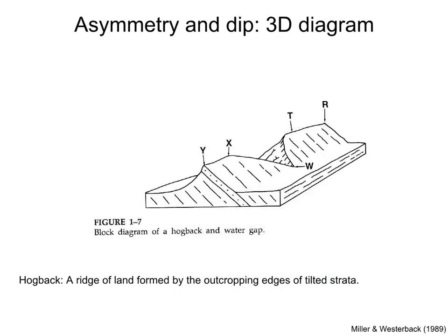These relationships are clear when we have units of different resistance to erosion. The strong units, for example sandstones, will form crests, while the weak units, for example shales, will form valleys. Therefore, the land surface will show some asymmetry.